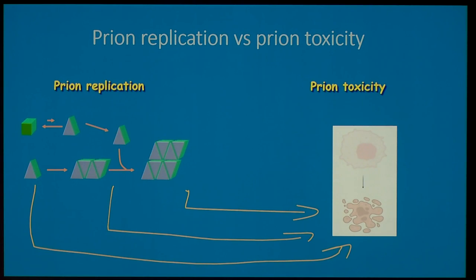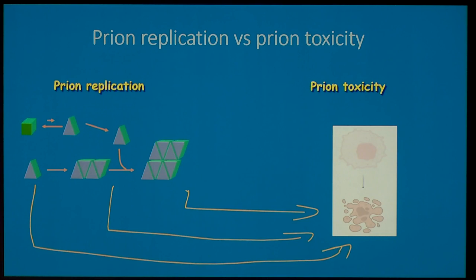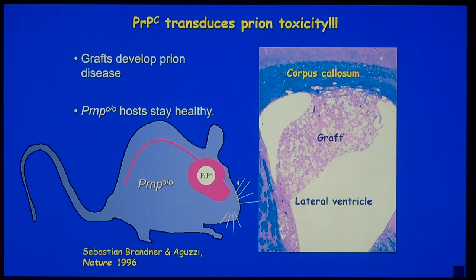And this damage is dramatic. I mean, if you look at the brain of a patient with terminal Creutzfeldt-Jakob disease, the cortex is completely destroyed, and in a very short period of time. So, the idea is that there is an intrinsic toxicity to prions that is much higher than for many other neurodegenerative diseases.